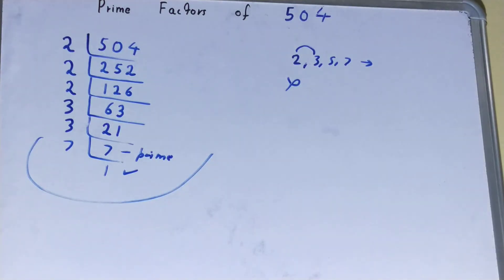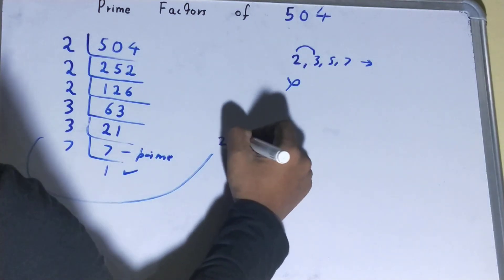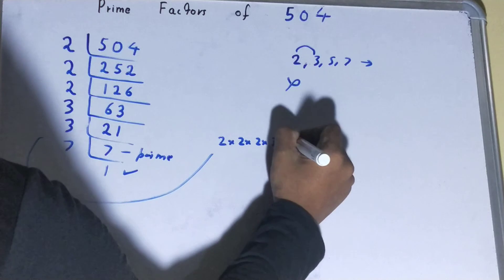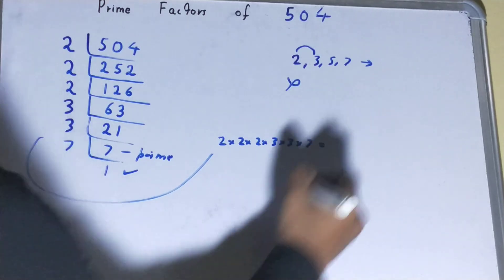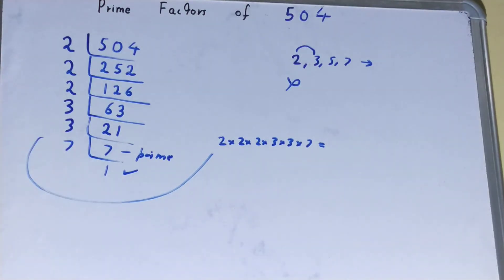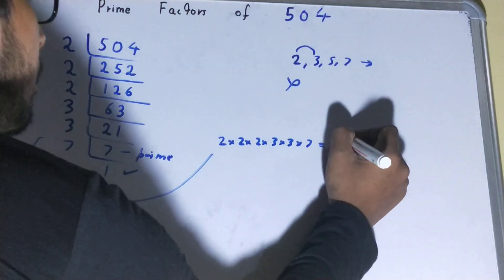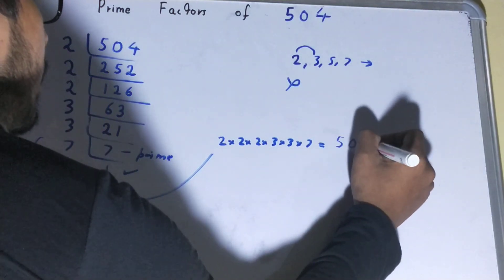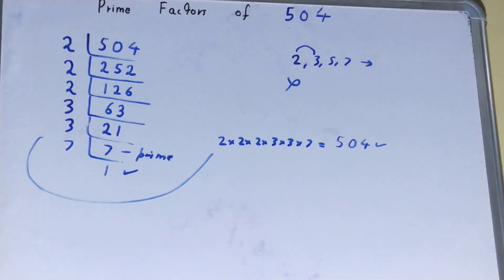That is 2 × 2 × 2 × 3 × 3 × 7. Now if you want to check whether it is right or not, you can multiply them, and if on multiplying you get the number back again, that means your calculation is correct. If not, you need to recheck.